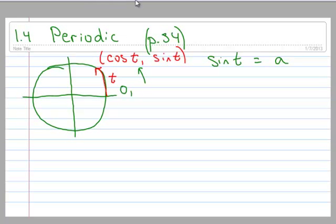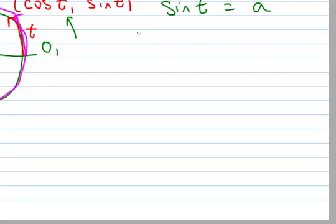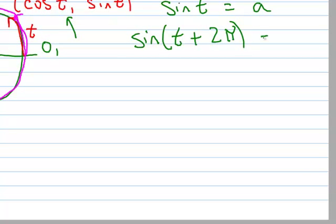Well then I know that I can also, if I started at 0 and went all the way around and past 0 and keep going, I could end up right back at that same point. And so now I know that I would have the sine of T, but it's T plus 2π, because I went two times around. But I'm still at the same spot, and so the sine value is going to be the same.